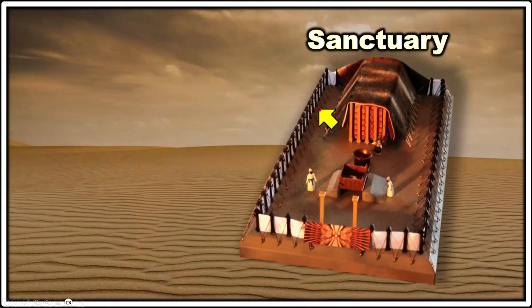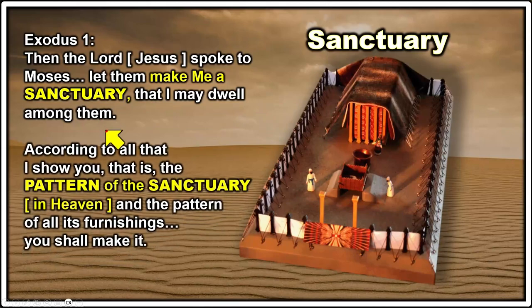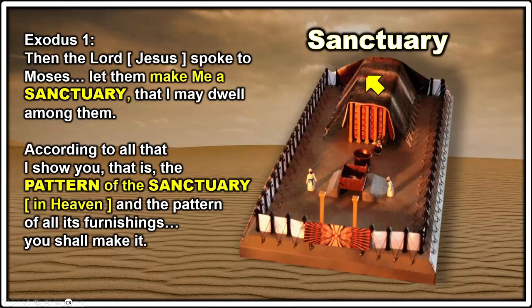Here is a picture of the sanctuary in the desert. We read in Exodus 1 that the Lord Jesus spoke to Moses: 'Let them make me a sanctuary that I might dwell among them. Make it according to all that I have shown you — the pattern of the sanctuary in heaven — and the pattern in all its furnishings you shall make it.' So the whole tabernacle in the desert was detailed out by God with exact specifications on what material to make it from.